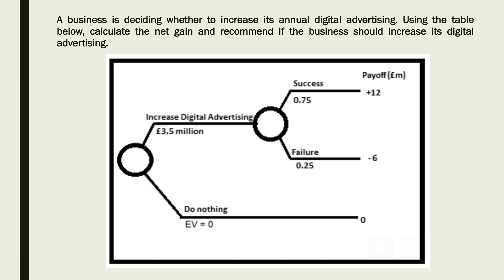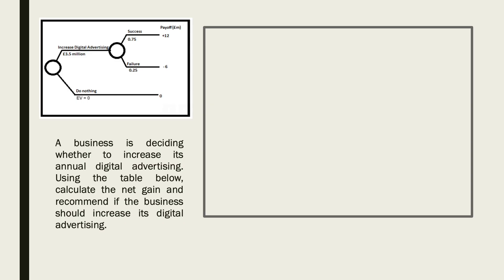Hopefully you've had a chance to work out the answer. Let's now go through the workings. I'm going to push that decision tree to the side — you'll also see the question on the side. The first thing is we need to work out for each of the different courses of action what happens, so if we go for increase in digital advertising, we first look at success.